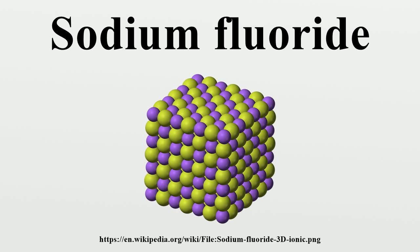General properties and occurrence: Sodium fluoride is an ionic compound, dissolving to give separated Na+ and F- ions. Like sodium chloride, it crystallizes in a cubic motif where both Na+ and F- occupy octahedral coordination sites. Its lattice spacing, approximately 462 pm, is somewhat smaller than that of sodium chloride. The mineral form of NaF, villiaumite, is moderately rare, and is known from plutonic nepheline and syenite rocks.